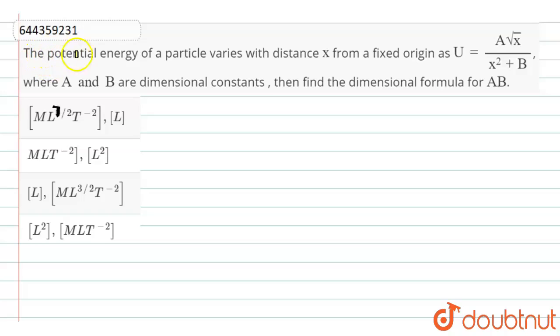Hello dear students, here the question is: the potential energy of a particle varies with distance x from a fixed origin as U equals A root x divided by x square plus B, where A and B are dimensional constants, then find the dimensional formula for A and B.